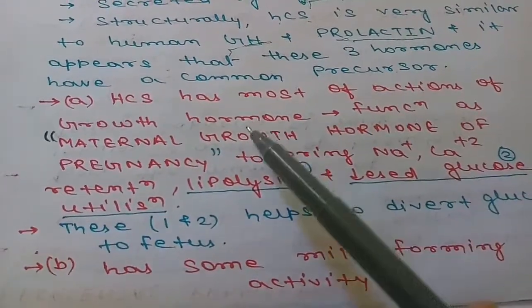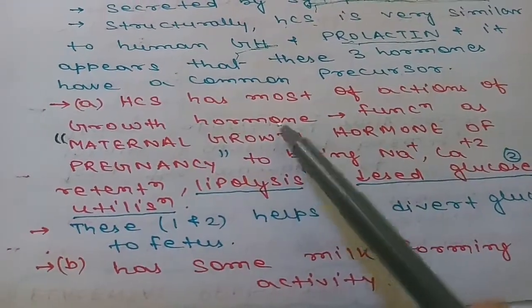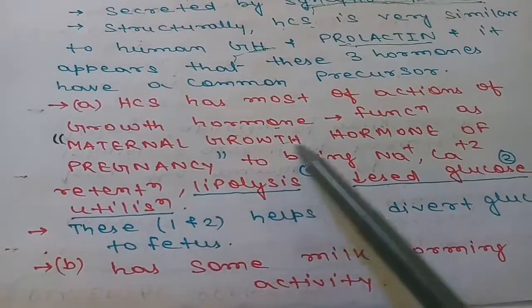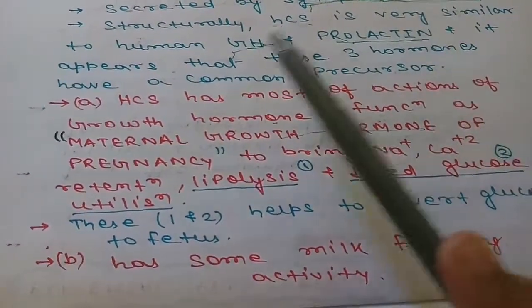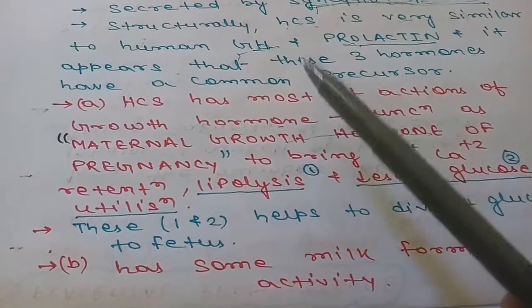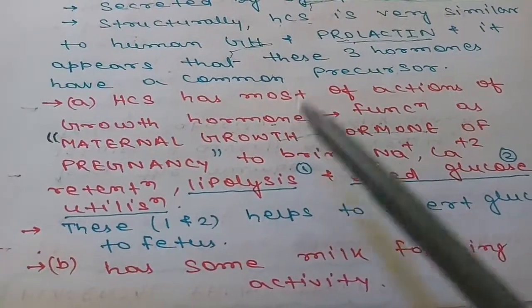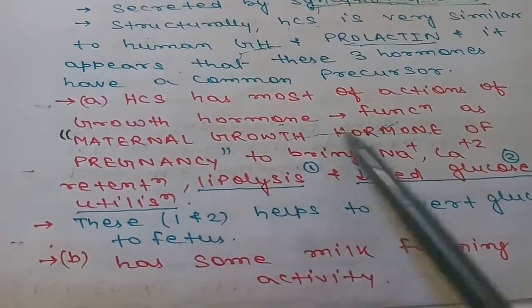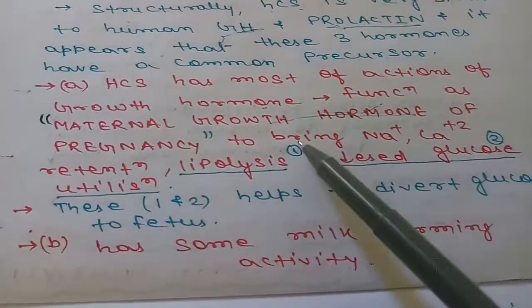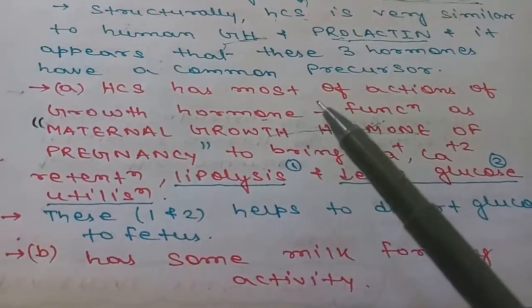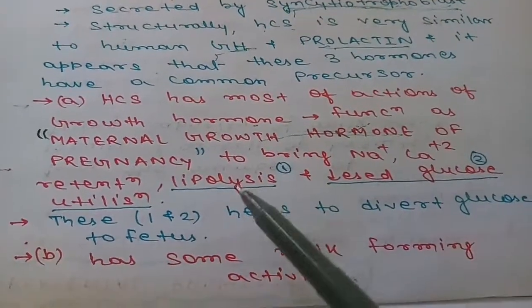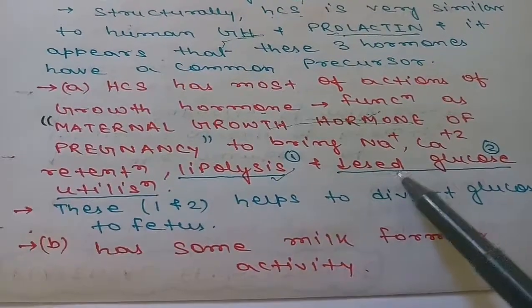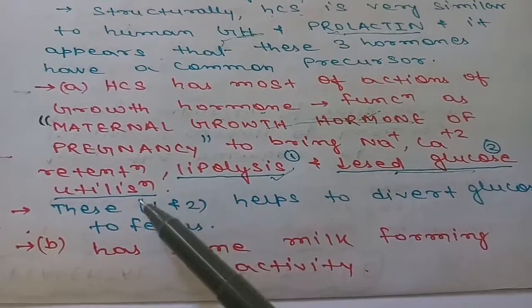HCS has most of the actions of growth hormone, so it is also known as maternal growth hormone of pregnancy because of its structural similarity and growth hormone-like actions. It brings sodium and calcium retention, promotes lipolysis, and decreases glucose utilization by cells.